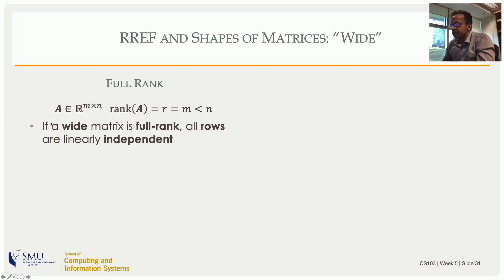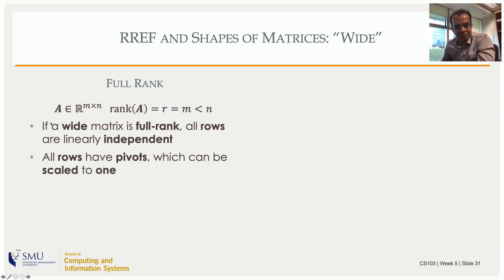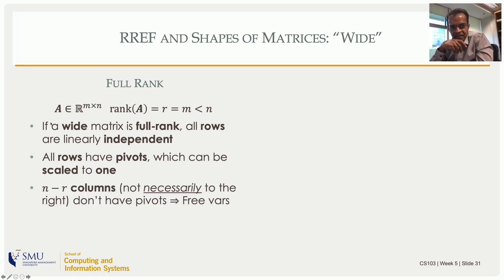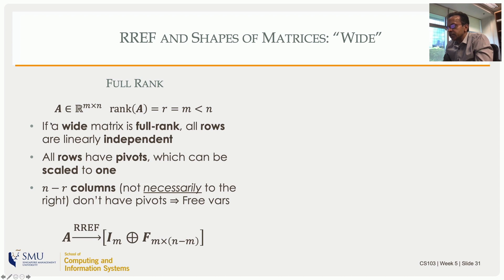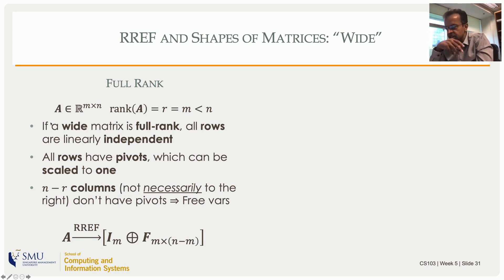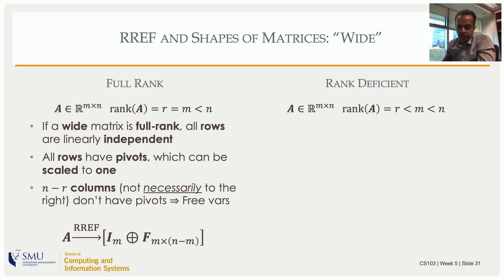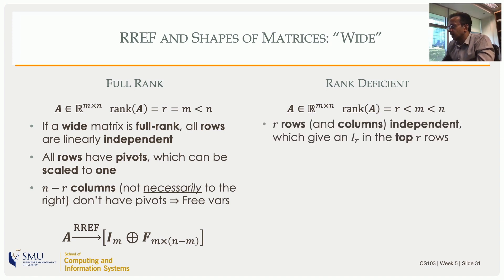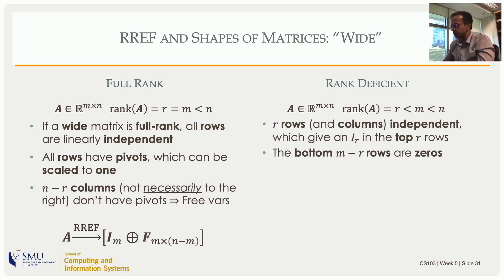For a wide matrix (more columns than rows), full rank means all rows are linearly independent, all rows have pivots, and there are no zero rows. The RREF contains an identity matrix of size r = m (number of rows), but the remaining columns correspond to free variables. We cannot guarantee the identity matrix will be in the leftmost columns — free variable columns may appear in between, so everything is shuffled. If rank-deficient (r < m), the identity matrix of size r appears somewhere in the first r rows, and the bottom m - r rows are zeros.